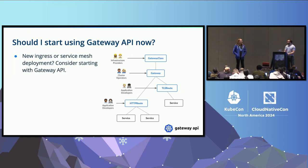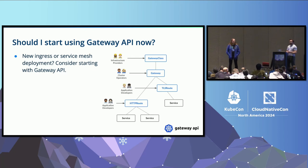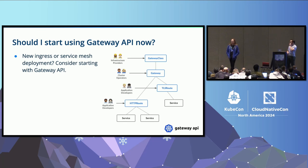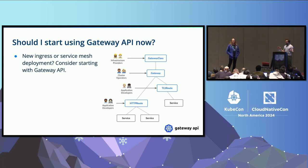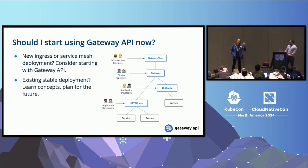Should you start using Gateway API now? It's an easier question now than it was last year — it's been GA for a year. If you have a new ingress or service mesh deployment, consider starting with Gateway API. If you're not in a position where you have a legacy infrastructure with specific complex advanced capabilities and need all the twists and knobs in Envoy or whatever your implementation may be, if you're just starting out and need MTLS and maybe some traffic routing, you should absolutely look at these Gateway API implementations to start.